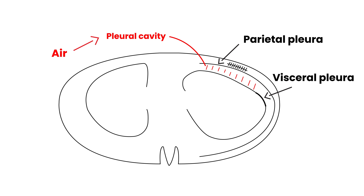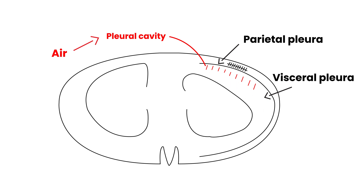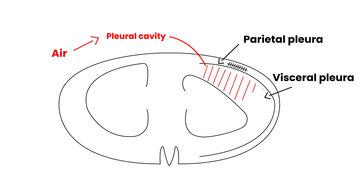Pneumothorax is basically air inside the pleural cavity — that's essentially the definition. When you have air inside the pleural cavity, what it does is, when you get a lot of air inside, it causes the lung to sort of collapse. The red color represents air here, and that's essentially what's happening — the air starts to make the lung collapse.